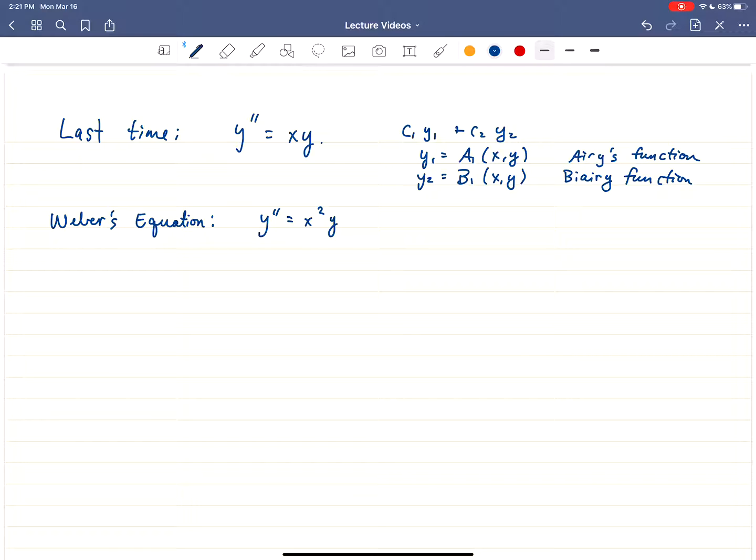So y double prime equals x squared y. I'm not going to worry about the initial values. I don't know if we've actually done that or not as a power series, so I may go back and study some particular power series with some initial values just to show you how that kind of works. But anyway, so we're going to study this equation called Weber's equation. And the process is exactly the same.